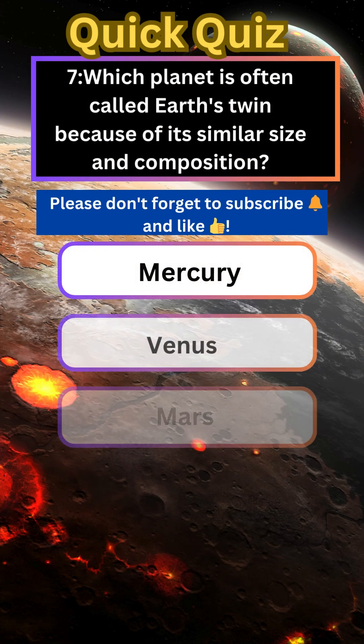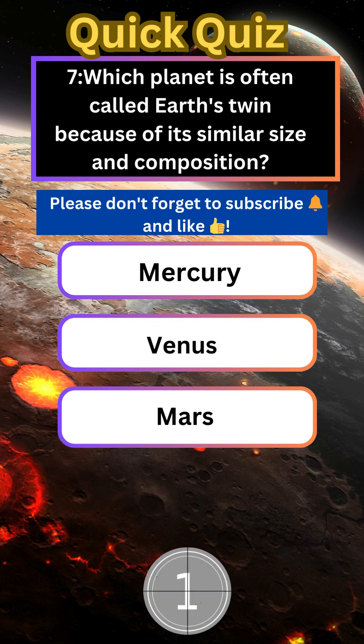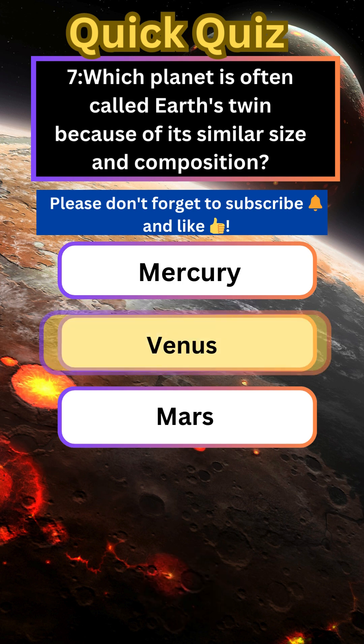Which planet is often called Earth's twin because of its similar size and composition? Venus.